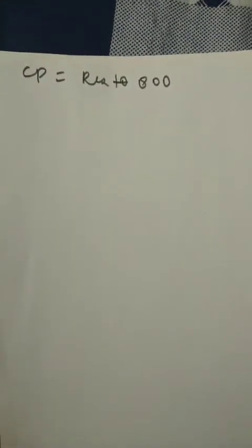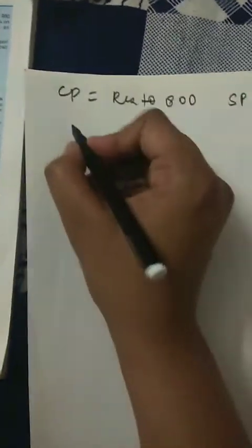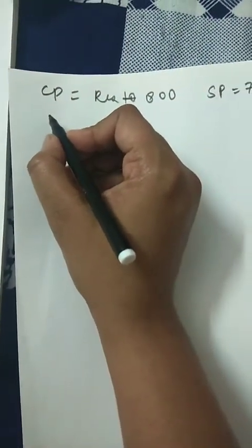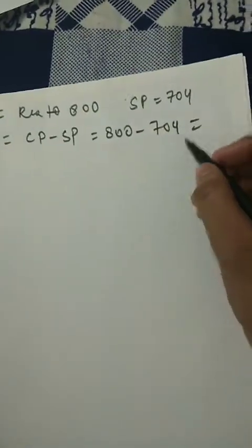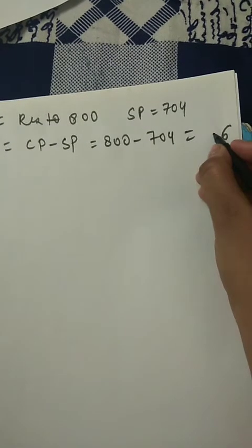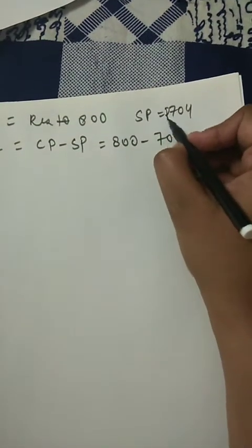Cost price is 800 and selling price was given as 704. So there is a loss. Loss = cost price minus selling price = 800 minus 704. Subtracting: loss is rupees 96. Remember to always write the unit rupees after values, whether it is cost price, selling price, or anything else.